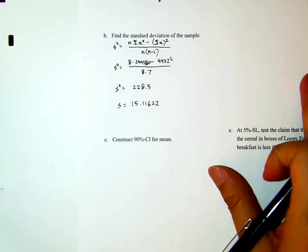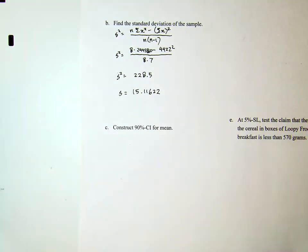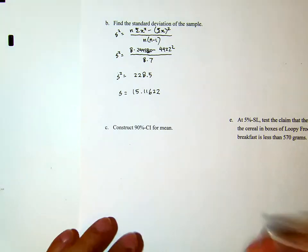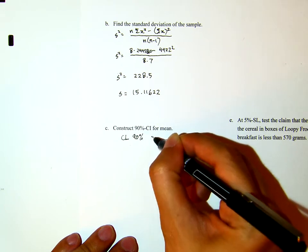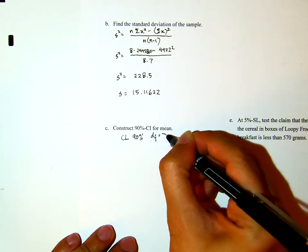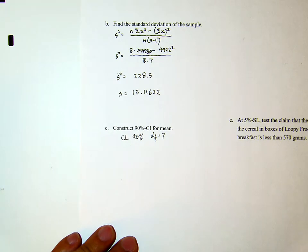Part C: construct a 90% confidence interval for the mean. Notice that we do not have the population standard deviation, so we will use the t-distribution. The confidence level is 90%, and the degrees of freedom is 7.